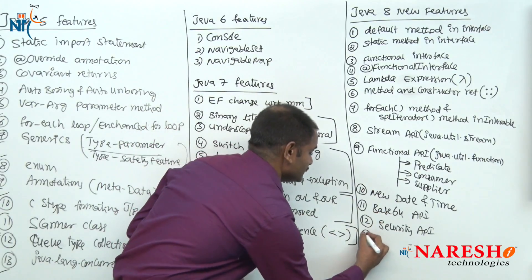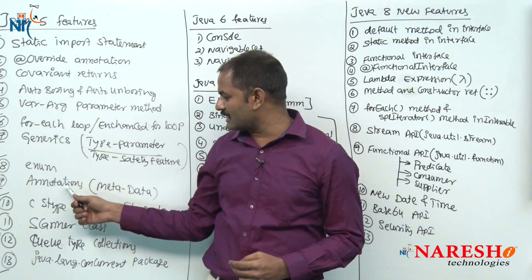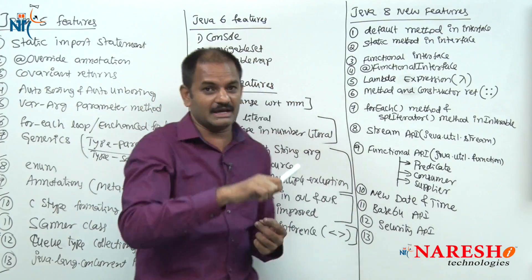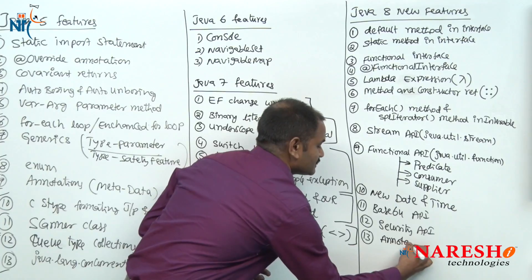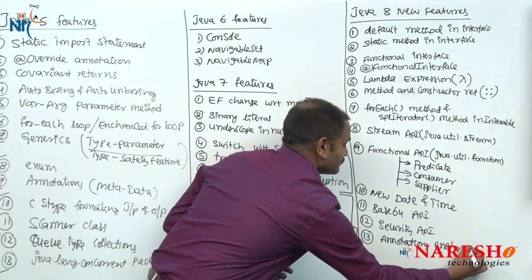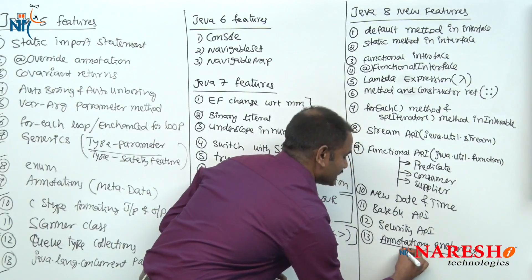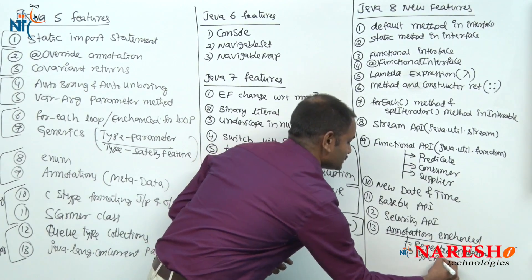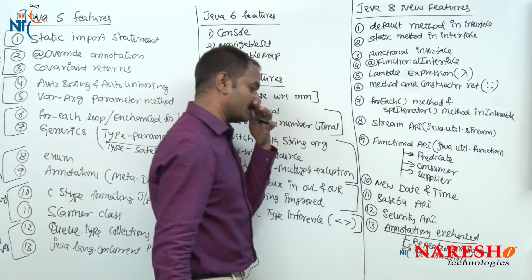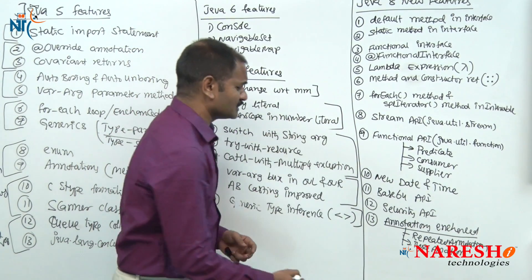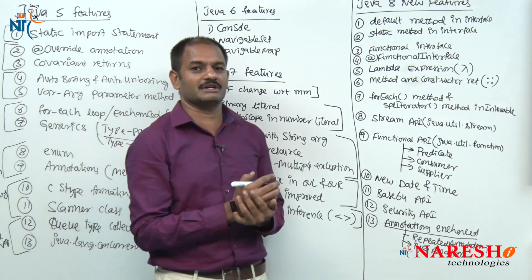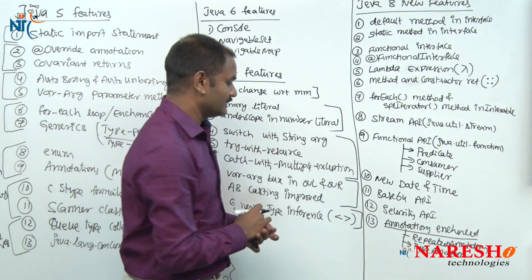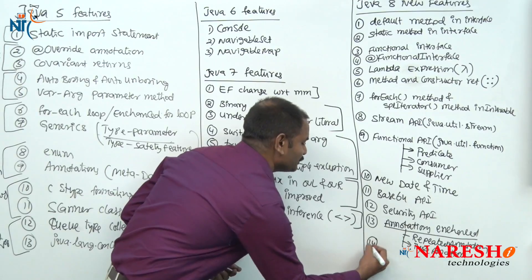Next, the annotation concept introduced in Java 5 was enhanced in Java 8 by adding two important annotation types: repeated annotation and type annotation. Additionally, pluggable annotation was also given. So three important annotation enhancements: repeated annotation, type annotation, and pluggable annotation.